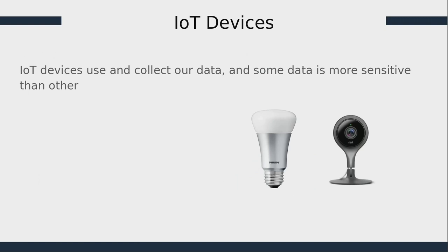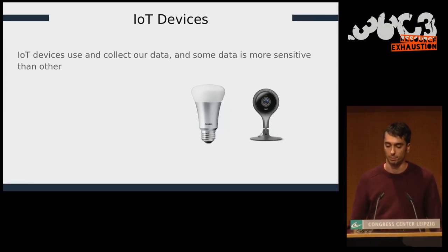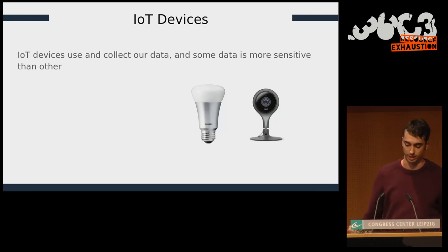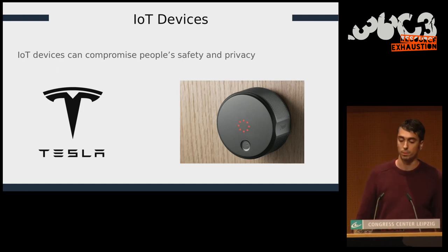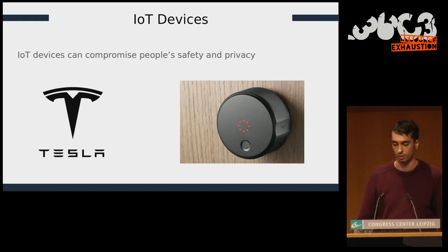IoT devices use and collect our data, and some data is more sensitive than others. Think about data collected by a smart light bulb versus data collected by a security camera. As such, IoT devices can compromise people's safety and privacy — consider the security implications of a faulty smart lock or the brakes of your smart car.